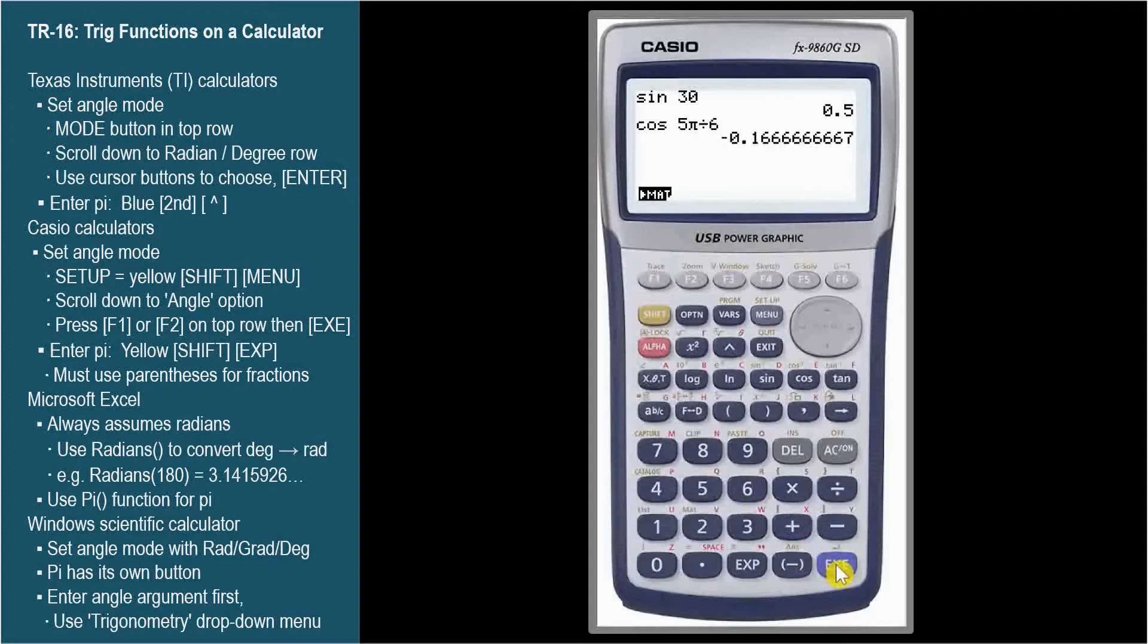And we get the wrong answer. The calculator found the cosine of 5 pi, which is negative 1, and then divided that answer by 6.